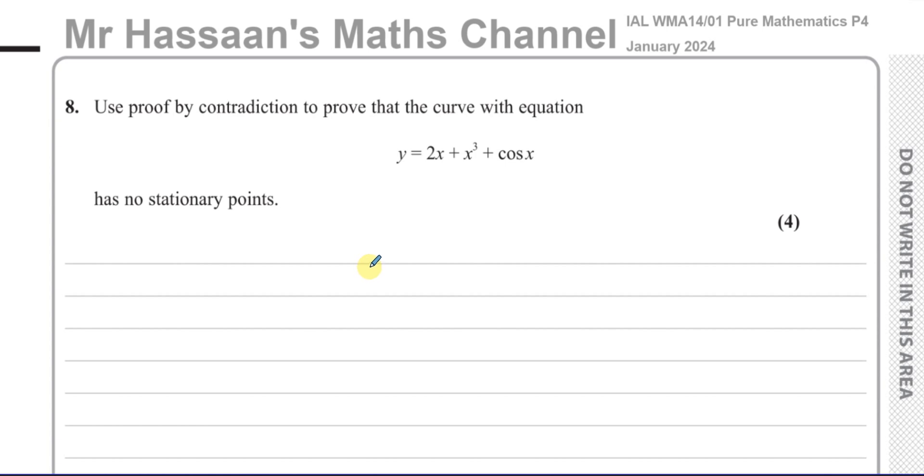This question is about proof by contradiction. Now, proof is one of the unpopular type of topics. It's one of the topics that was introduced to the syllabus in about 2000 with the new P papers replacing the C papers, and some students find it a bit daunting or confusing, especially when it comes to proof by contradiction.